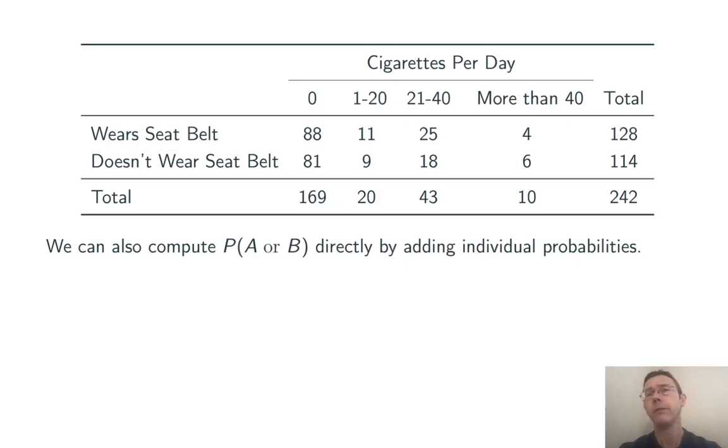Let's compute probability of A or B directly just by adding the individual probabilities. Here I'm going to be using the addition rule for disjoint events. So the event A or B consists of a total of five different cells in this table. We have they wear a seat belt but don't smoke. They don't wear a seat belt and don't smoke. They don't wear a seat belt and they smoke 1 to 20 cigarettes a day. They don't wear a seat belt and they smoke 21 to 40 cigarettes a day. They don't wear a seat belt and they smoke more than 40 cigarettes a day.